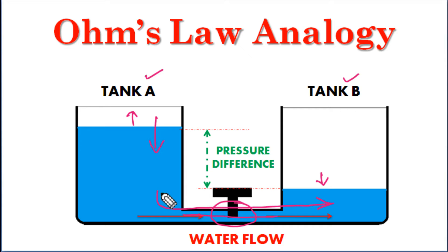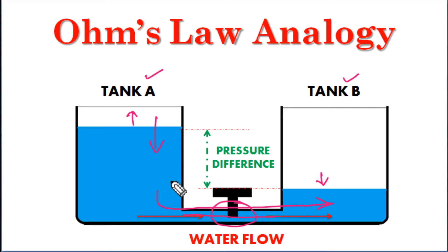The pressure difference between A and B corresponds to the potential difference. The temperature is kept constant. The current flow through a conductor is related to the potential difference.